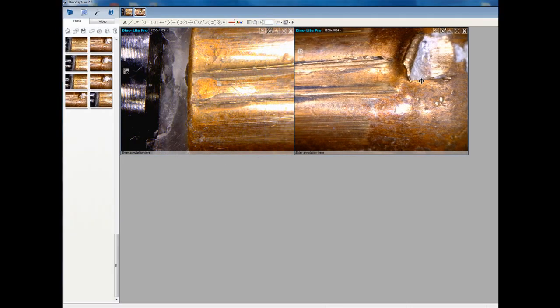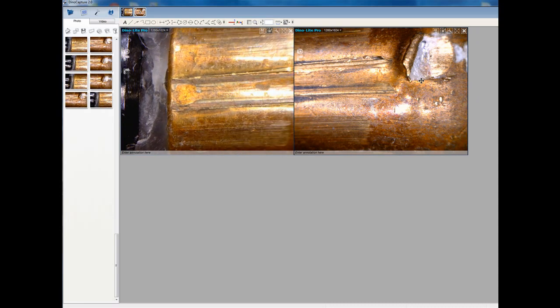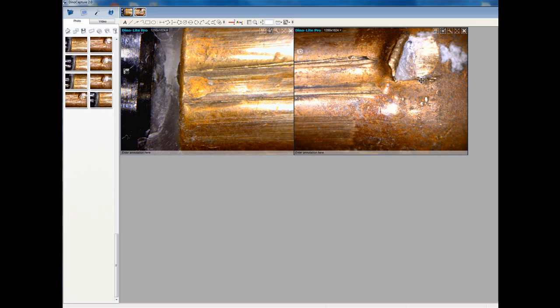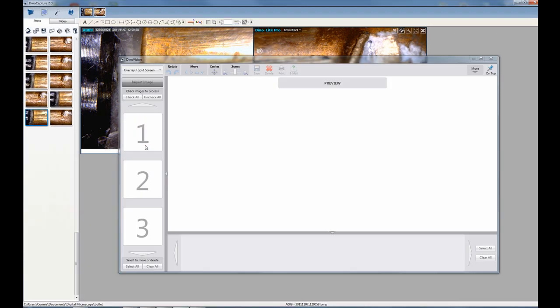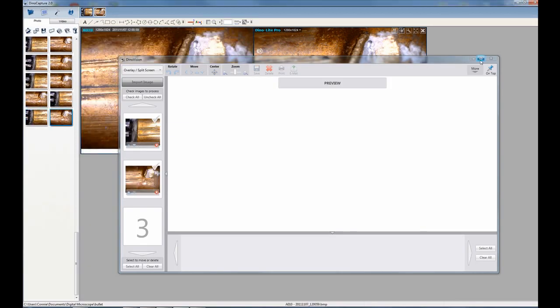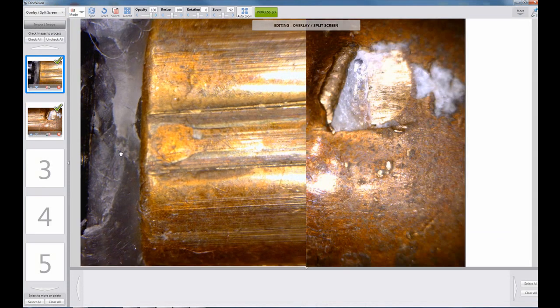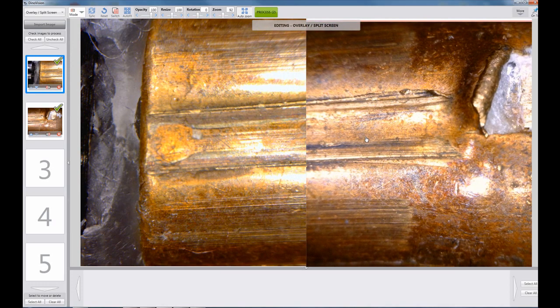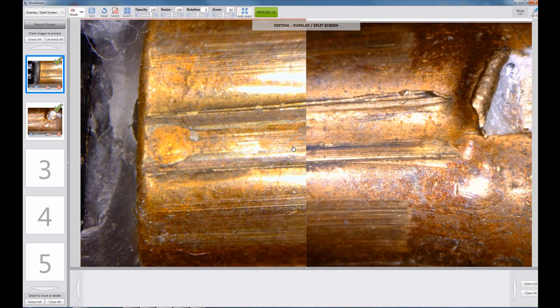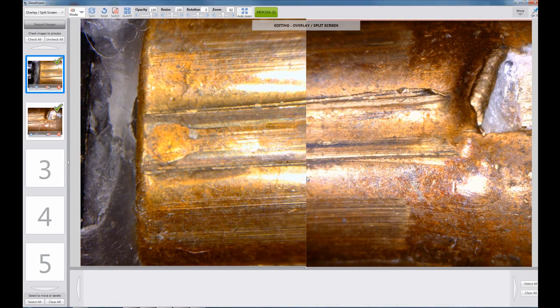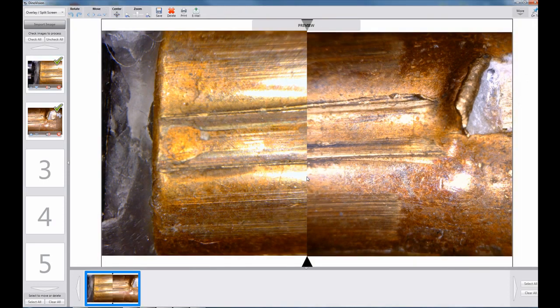The DynoCapture software has native comparison features. Here are the two live images of bullet comparisons examining lands and grooves. After capturing the images, one can transfer images directly into the DynoVision software, taking advantage of the overlay split screen feature to positively identify and document a match. Here, creating a final single image.